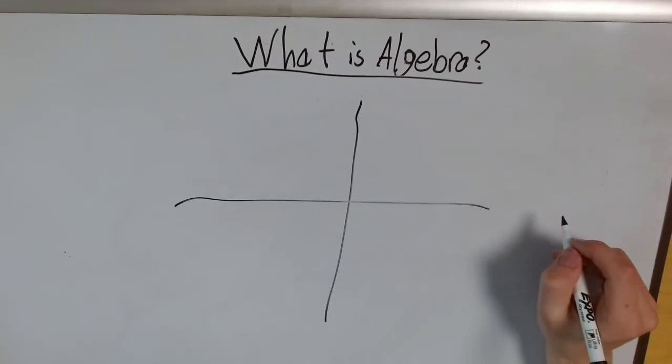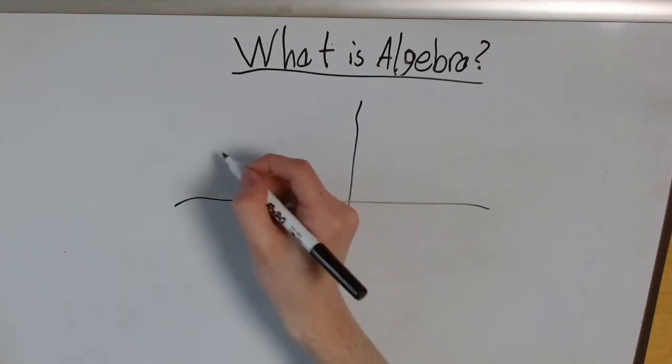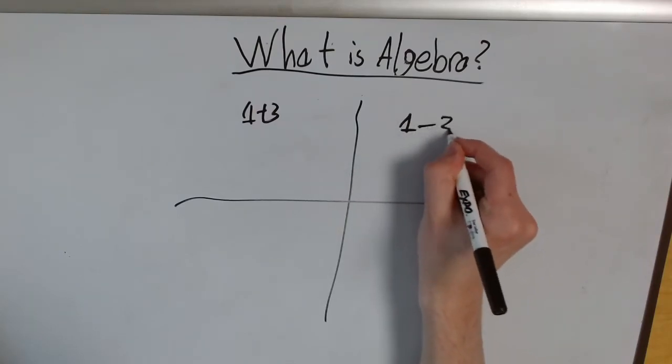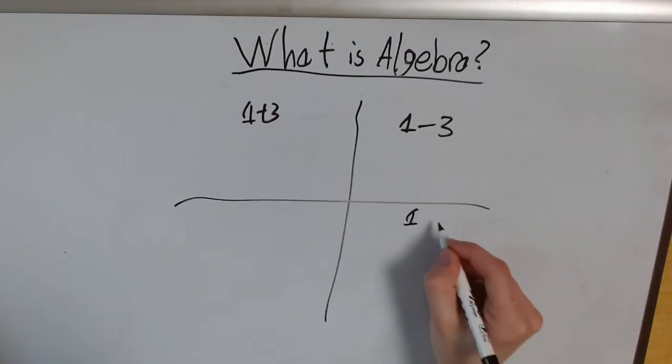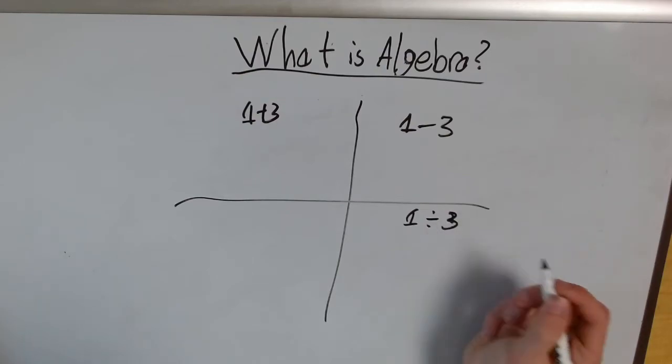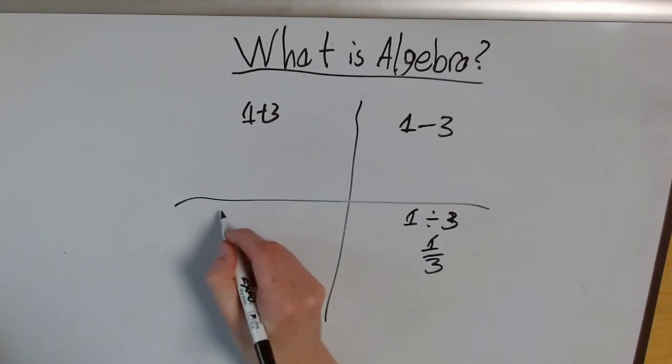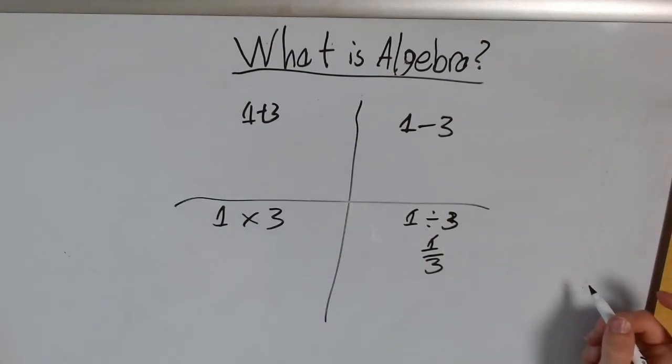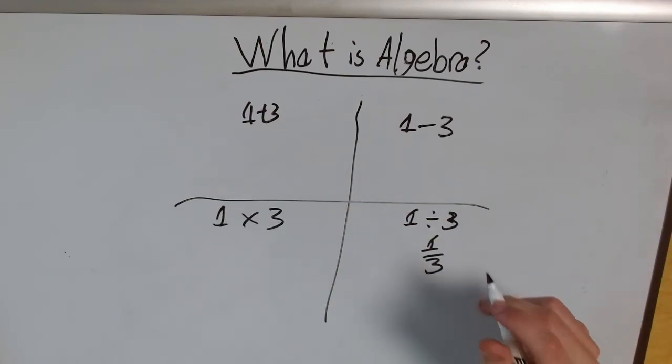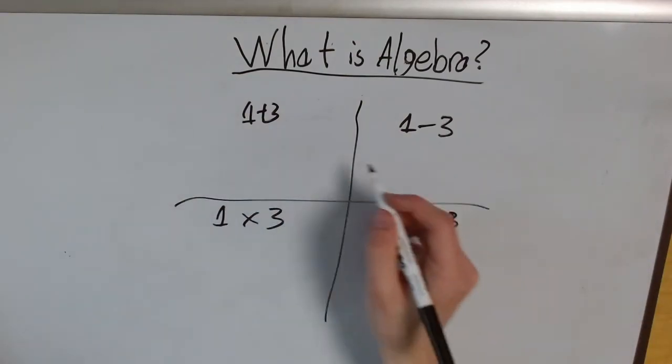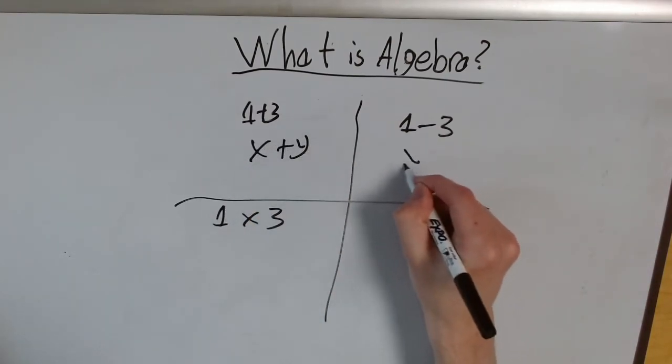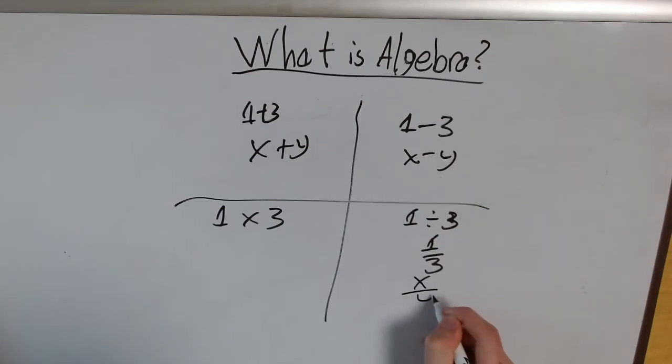Alright? So let's make a t-chart. I can do 1 plus 3, 1 minus 3, 1 divided by 3, or 1 times 3. What's the algebra equivalent for each of these? I'm going to use x and y as my algebraic variables. Well, for most, it's the exact same: x plus y, x minus y, x over y.